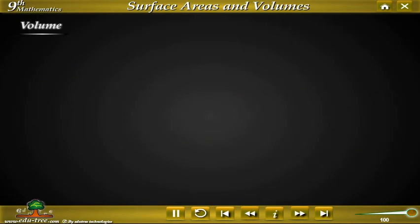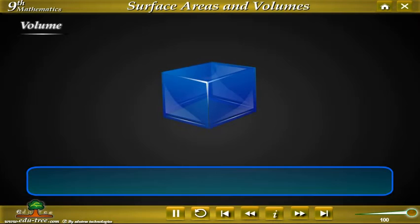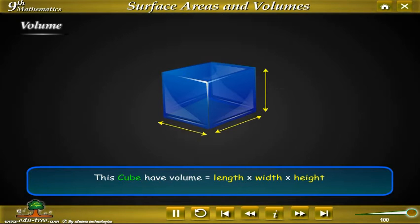We try to understand with the help of an example. We have a cube. This cube has volume which equals to length into width into height. Let's say it equal to 1 cm into 1 cm into 1 cm, and it is equal to 1 cm³.